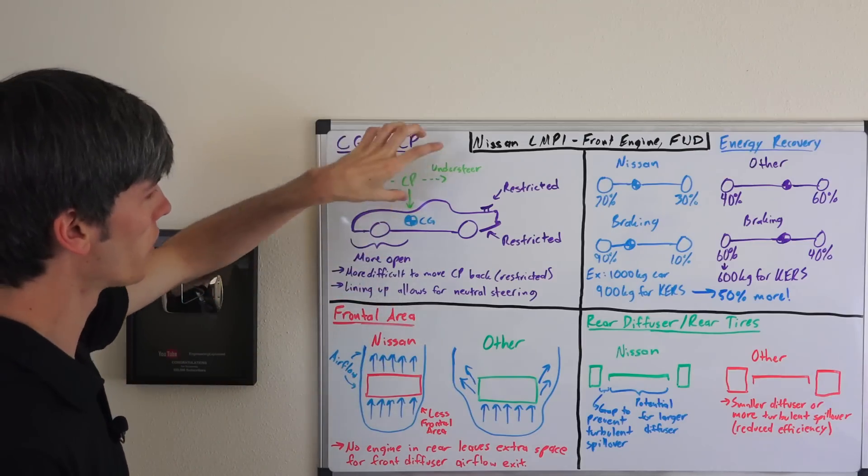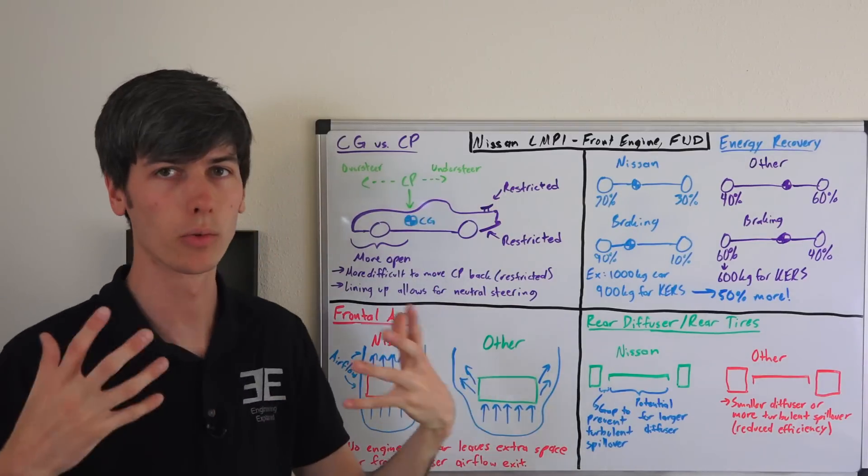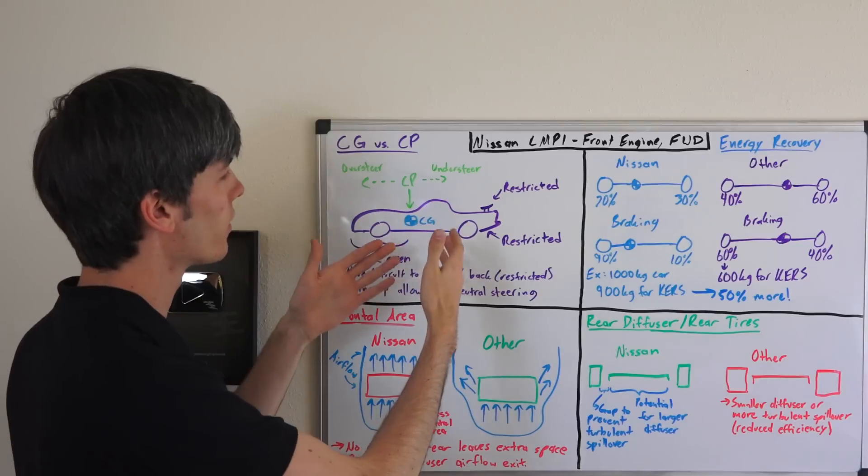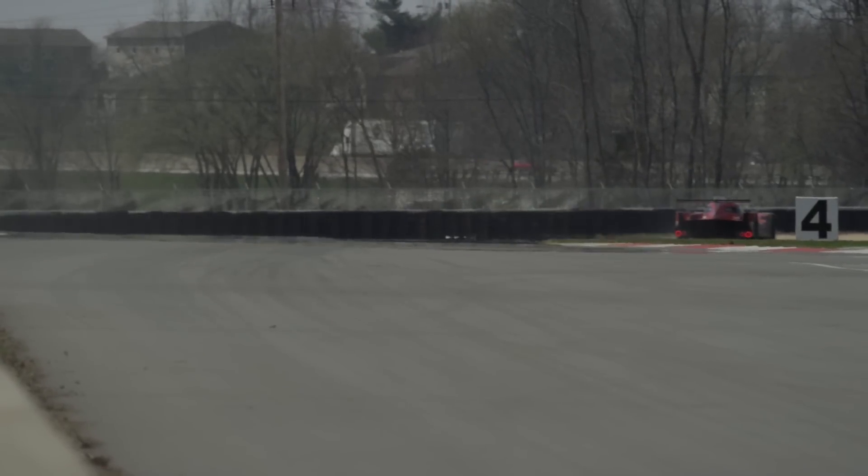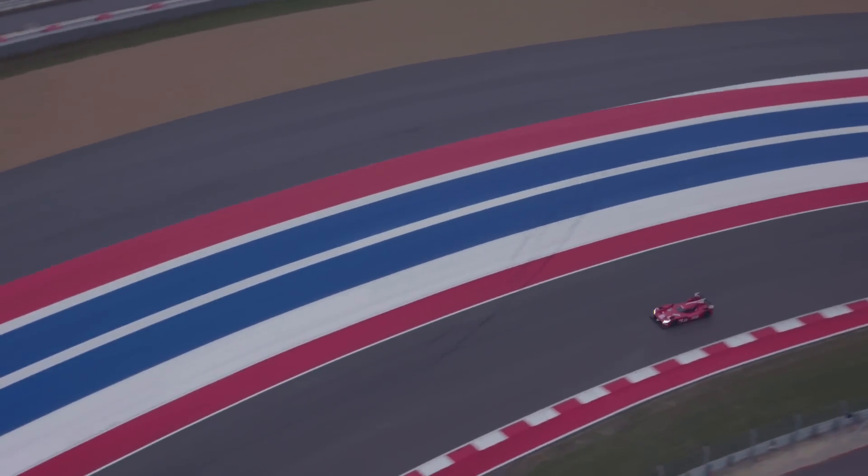And so the cars that are rear-wheel drive are trying to pull this back and basically the rule book is trying to prevent them from doing that. Whereas in Nissan's case, the rule book is kind of allowing them to bring that center of pressure forward so they can have a very neutrally handling car, even though it's front engine, front-wheel drive, which you might think would just be tons of understeer. So they're able to set that up really well.